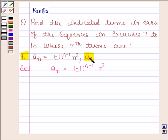Since we need to find a_9, we will put n = 9 in the nth term. By substituting n = 9 in the nth term, we get a_9 = (-1)^(9-1) * 9^3.